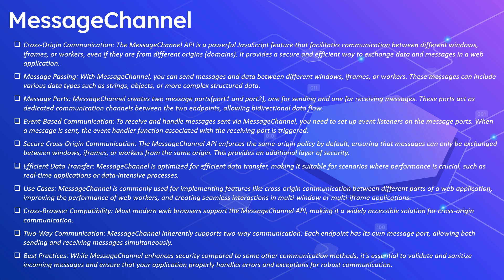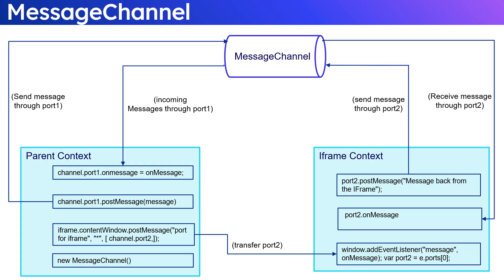Handle errors appropriately for robust communication. In this diagram, communicating between a parent window and an iframe: in the parent context, we first create a MessageChannel, then transfer channel.port2 to the iframe. Through channel.port1, we post messages to the iframe and receive messages via channel.port1's onmessage handler. From the iframe context, it receives port2 from the parent, uses port2.postMessage to send to the parent, and receives messages via port2's onmessage handler.